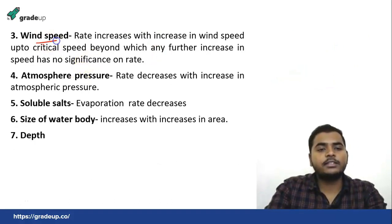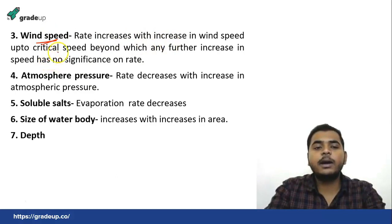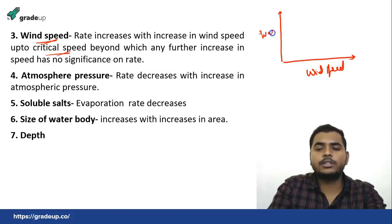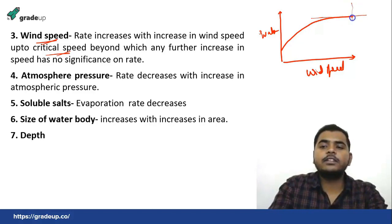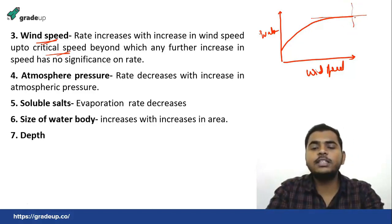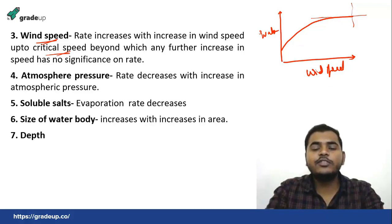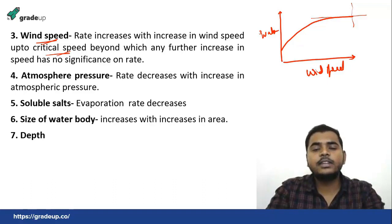The third factor is wind speed. The rate of evaporation increases with increasing wind speed up to a critical speed, after which it becomes constant. What happens is that due to evaporation the air gets saturated with water vapor, and due to wind velocity this saturated air gets moved away and is replaced by a new mass of air, which increases the rate of evaporation. After the critical wind speed, even if wind speed increases further, there is no change in the rate of evaporation.